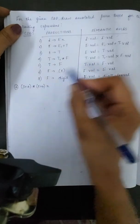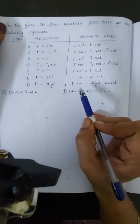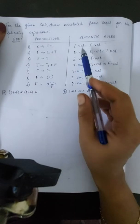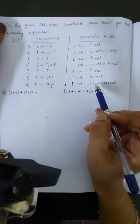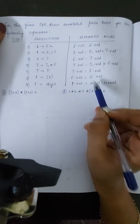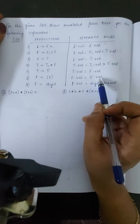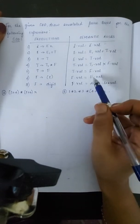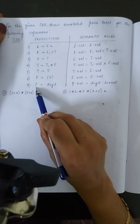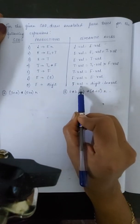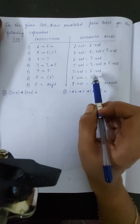Looking into the syntax directed definition, it is clear that it is an S-attributed SDD because all the attribute values given here are synthesized attributes. All attributes are synthesized because there are no inherited attributes present. Hence it is an S-attributed SDD.